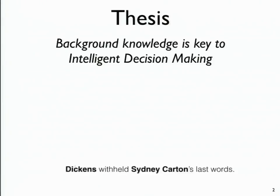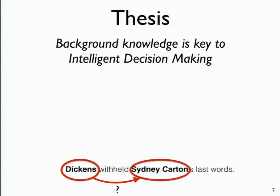To drive home the point, take a concrete example. Say I have a natural language understanding system going over the web, and it comes across the sentence: 'Dickens helped in Sydney Carton's last words.' For a computer to make sense of this sentence is a really challenging job. Even after identifying entities — Dickens and Sydney Carton — what kind of relationship exists between them? Sydney is also a city name. Is it a city or a person? It's not clear.